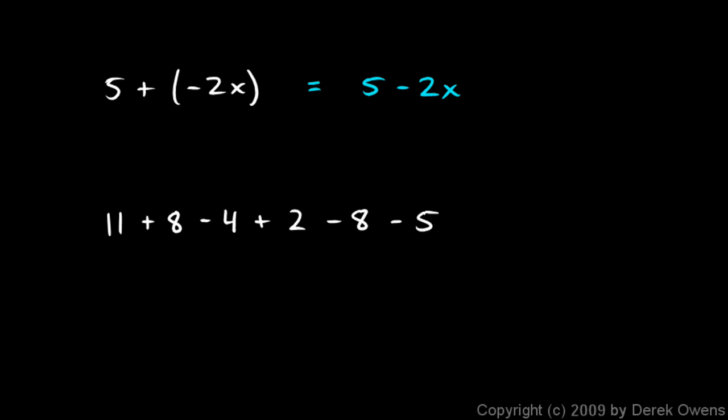Or look at this next example. This is different. 11 plus 8 minus 4 plus 2 minus 8 minus 5. We can group all the positive numbers together: 11 plus 8 plus 2. So there's the 11, the plus 8, and the plus 2. And all the negative numbers: there's a negative 4, a negative 8, and a negative 5. And let's add these up. 11 plus 8 plus 2 is 21. And we're going to add that to all of these things added together.